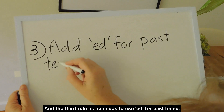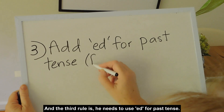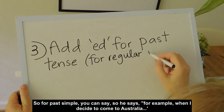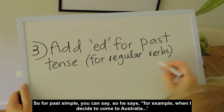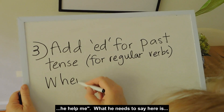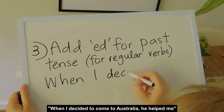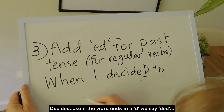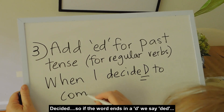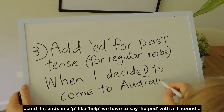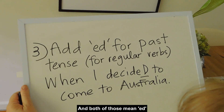The third rule is he needs to use -ed in the past tense. For past simple, when he says 'when I decide to come to Australia, he helped me,' what he needs to say is 'when I decided to come to Australia, he helped me.' If the word ends in a D, we say 'did.' If it ends in P like 'help,' we say 'helped' with a T sound. Both of those mean -ed. So in past tense, we need to use -ed.